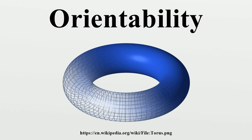Most surfaces we encounter in the physical world are orientable. Spheres, planes, and tori are orientable, for example. But Möbius strips, real projective planes, and Klein bottles are non-orientable. They, as visualized in three dimensions, all have just one side. The real projective plane and Klein bottle cannot be embedded in R3, only immersed with nice intersections. Note that locally an embedded surface always has two sides.